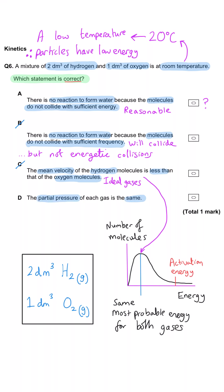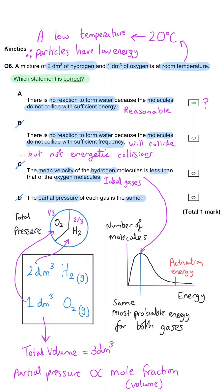And D, the partial pressure of each gas is the same. No, because there's twice as much hydrogen, there'll be twice the partial pressure. And so, A is correct.